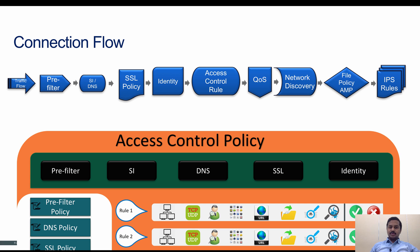When you define an access control policy for a device with various features turned on — like pre-filter policy, security intelligence, DNS, and user-defined access rules — when traffic arrives at an ingress interface (inside or outside interface), first, if that connection is a new connection, it checks against the pre-filter policy. If there is a rule which matches the pre-filter policy, then based on the action it gets applied. If the traffic is allowed or fast-path, the traffic bypasses all other components and is sent to the egress interface.